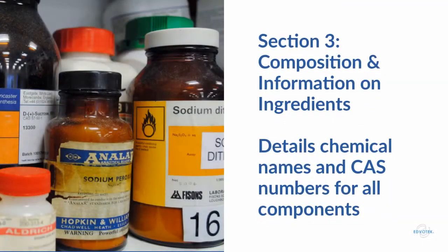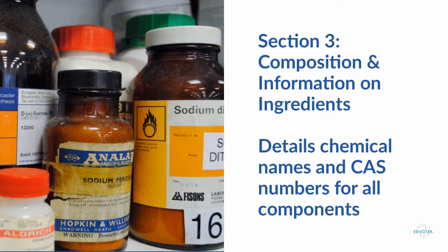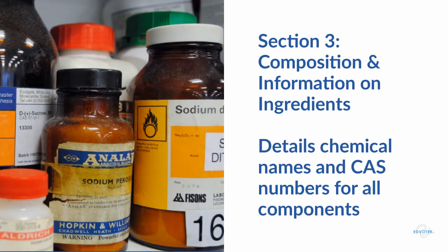Section 3 includes information on chemical ingredients, including the chemical name, the common name, and the chemical abstract service, or CAS number. For mixtures, this section provides information for all chemicals along with the relative percentages. Manufacturers can protect chemical formulations that are trade secrets, but they must still declare hazards and concentrations.